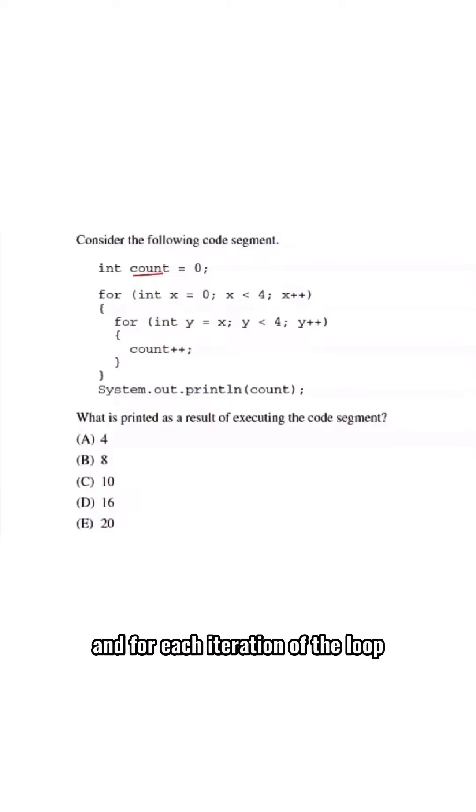And for each iteration of the loop, count is incremented. At the end of it, count is printed out. And the question is asking us, what is printed as a result of executing the code segment?